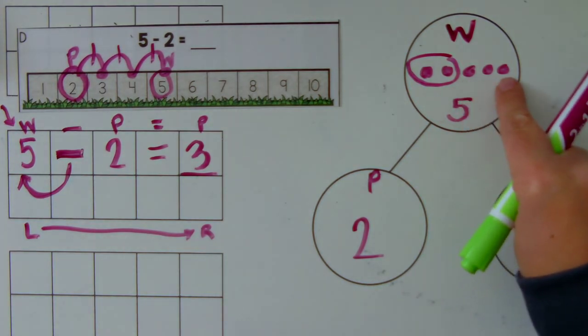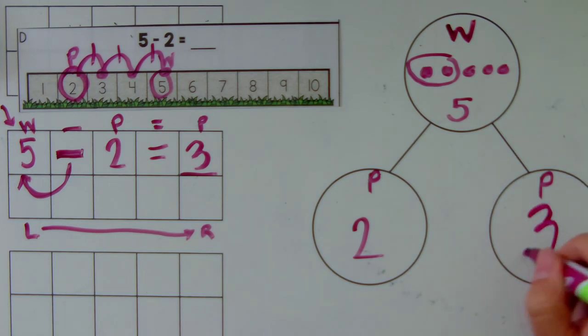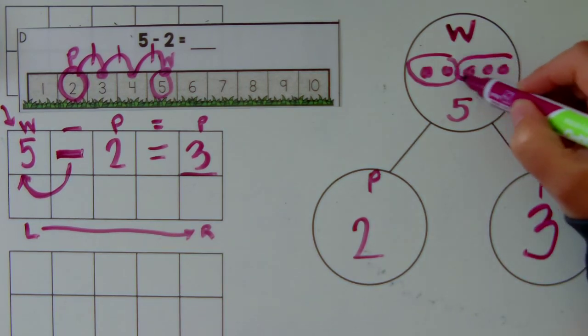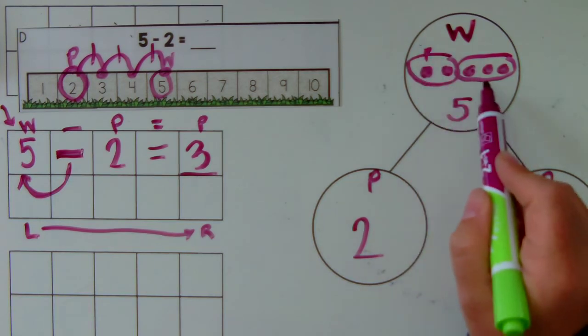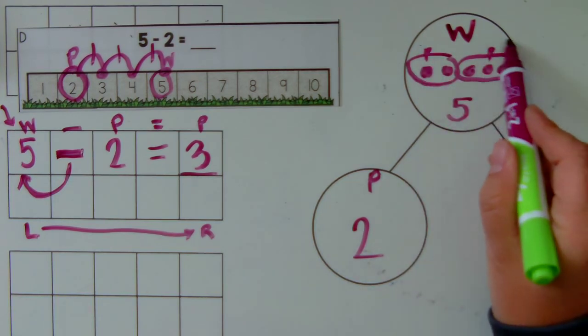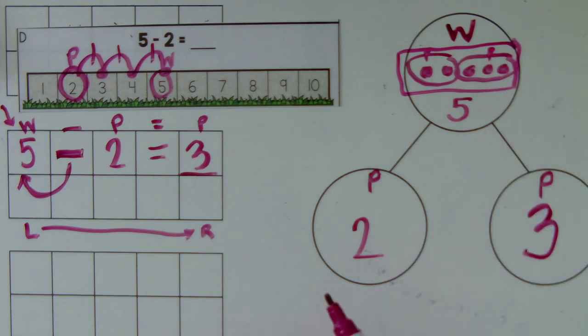1, 2, 3 is left from the other part. 2 is a part. 3 is a part. But all of it together is 5 for the whole.